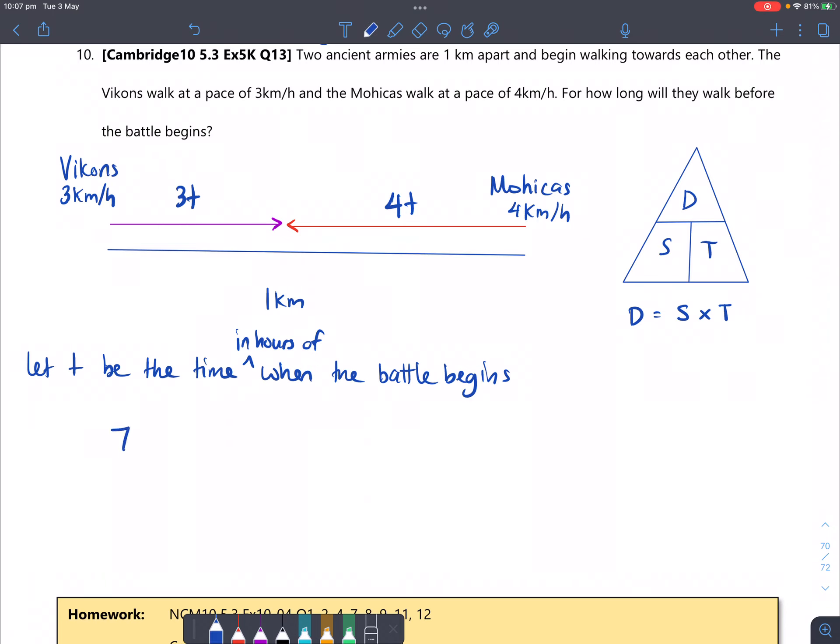So I would have 7T equal to one kilometer, or 1. So that means T would equal to one seventh of an hour. And that's how long they will walk before the battle begins.